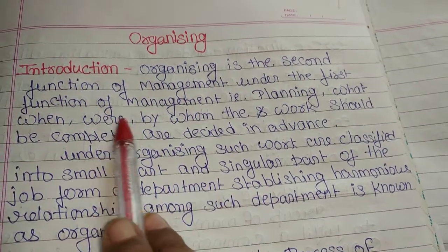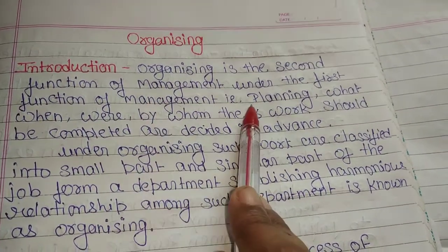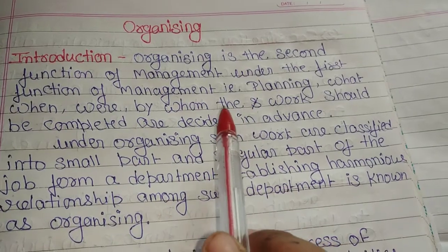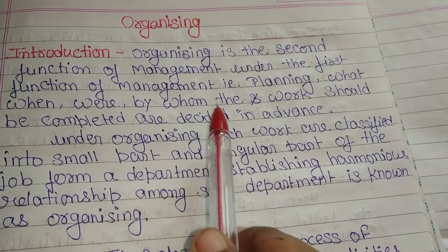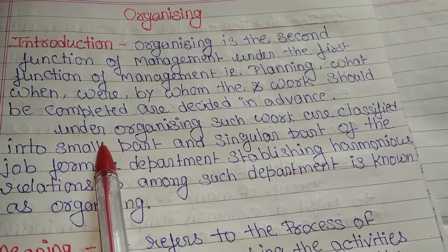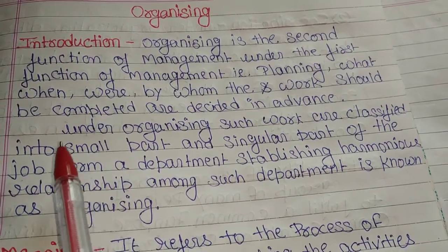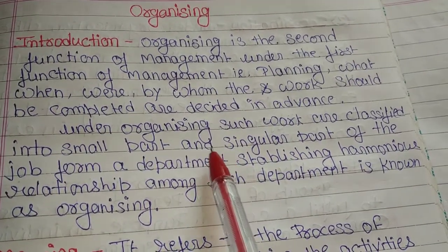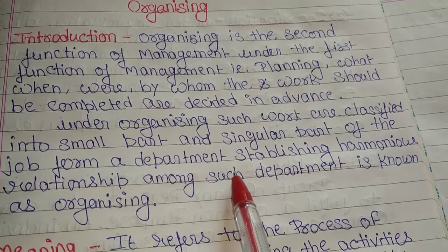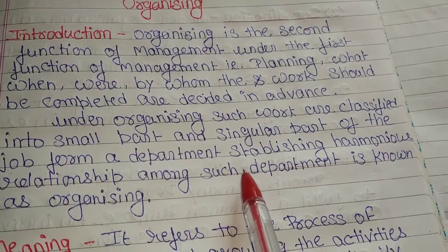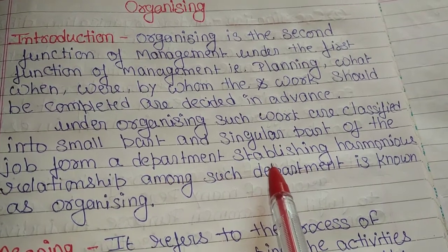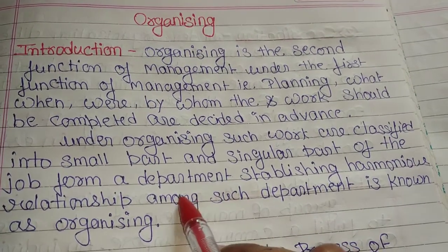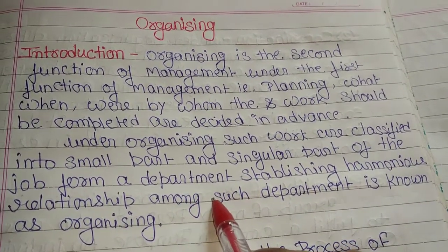In the introduction, it has been told that organizing is the second function of management. In planning, we think about any work before it is done. And if you talk about organizing, the work of the organization or enterprise is divided into small parts, and a harmonious relationship is established among all those parts so that people can work together effectively.